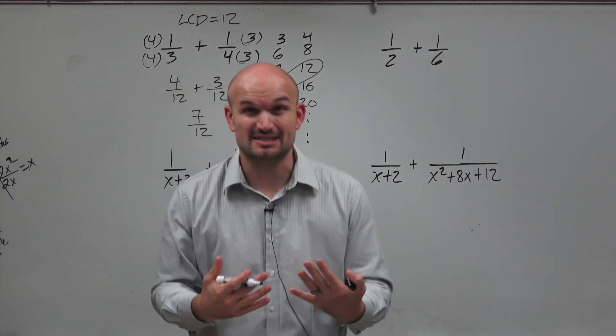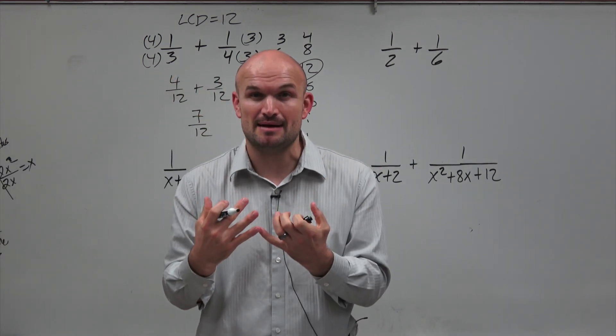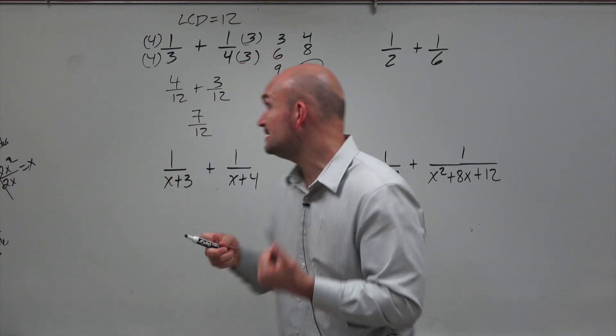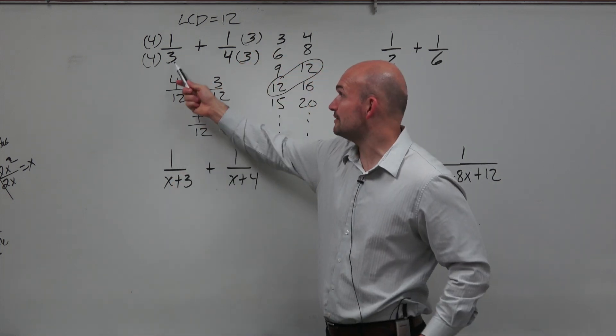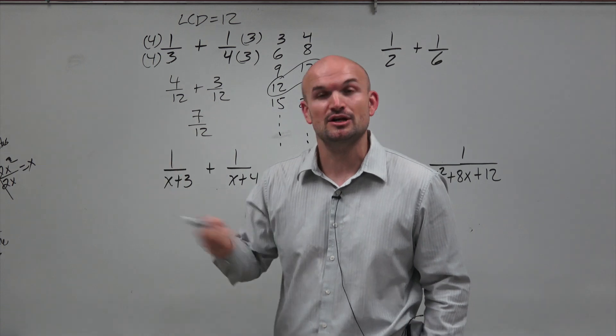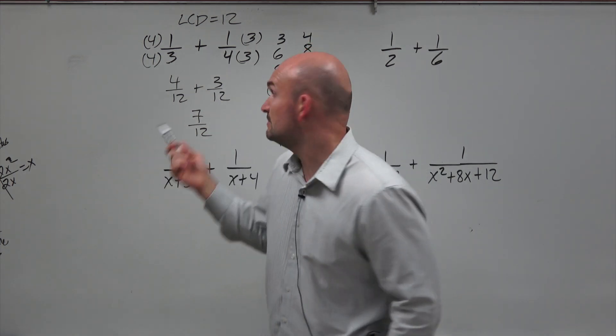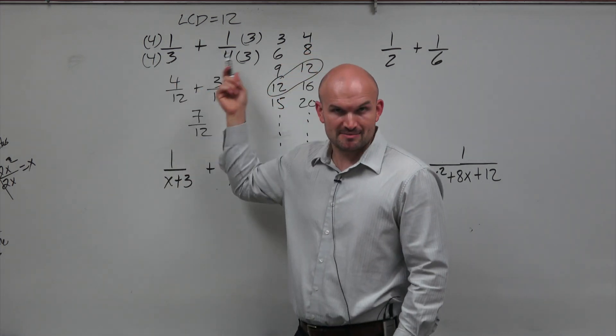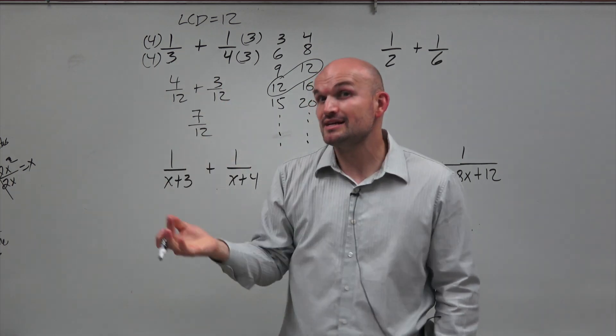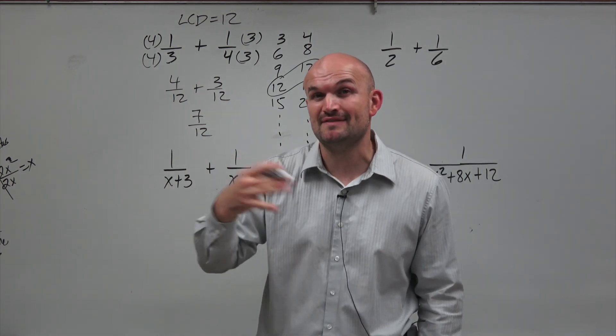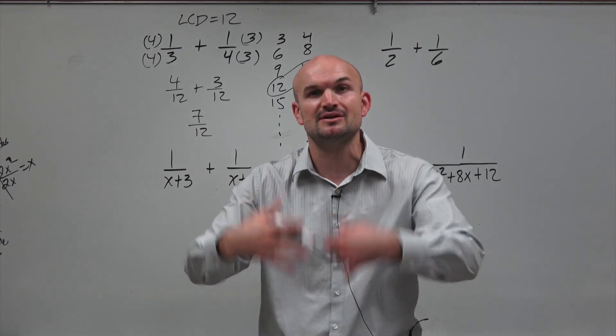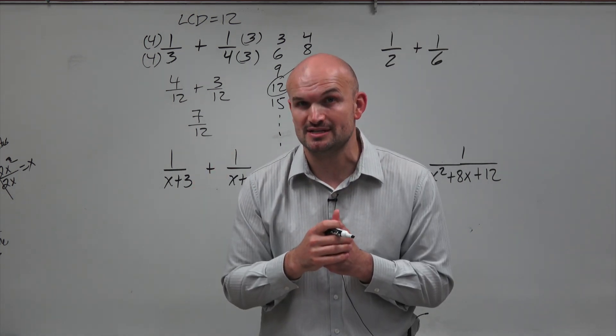So one of the tricks that we like to look at is we want to identify the common denominator. If they don't have anything in common or any factors in common, do you see how the 3 and the 4 do not have any factors in common? You can simply just multiply them, because 12 was 3 times 4. So that's going to work any single time that they don't have any factors in common. Just multiply your two denominators, and that's how you find the LCD.